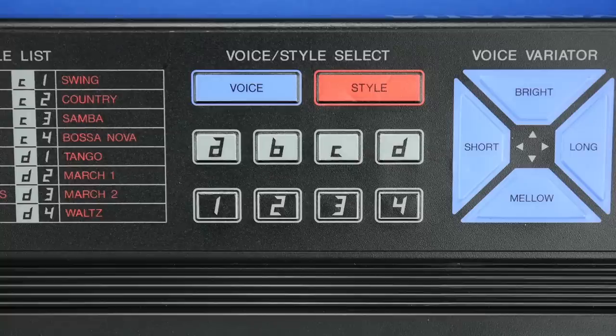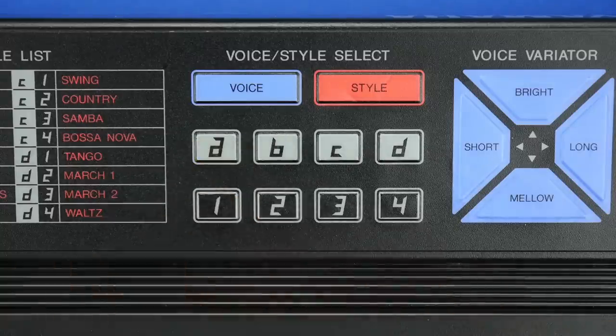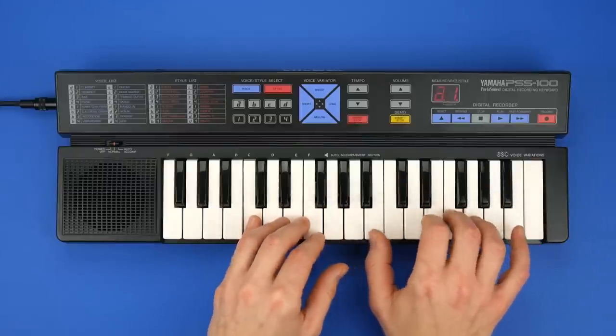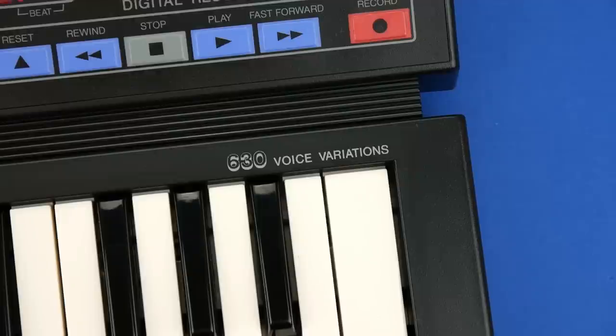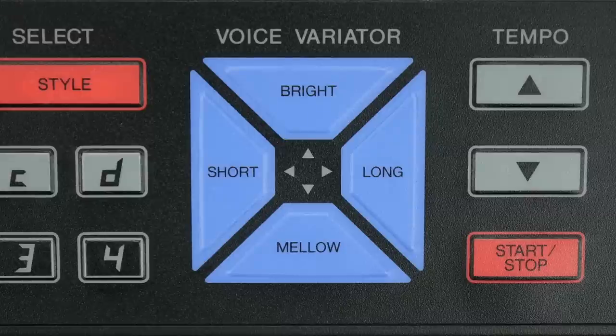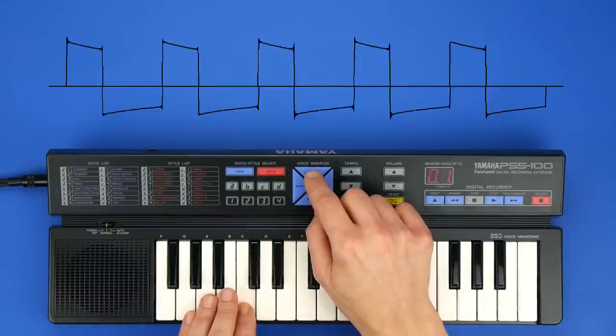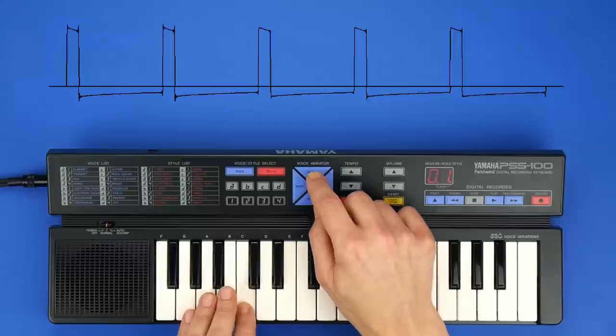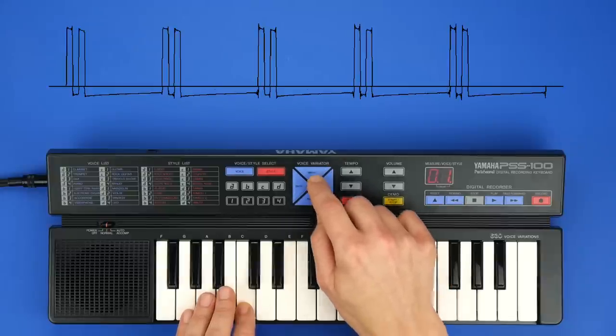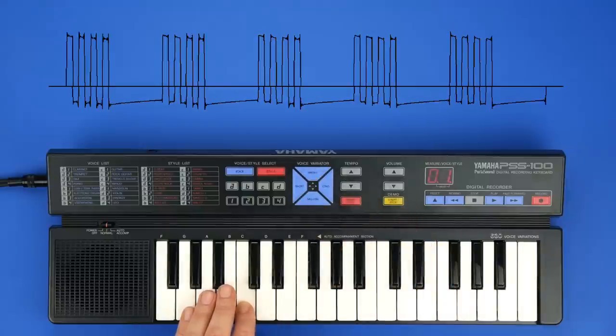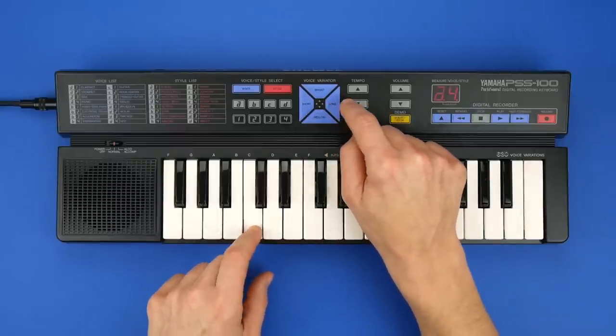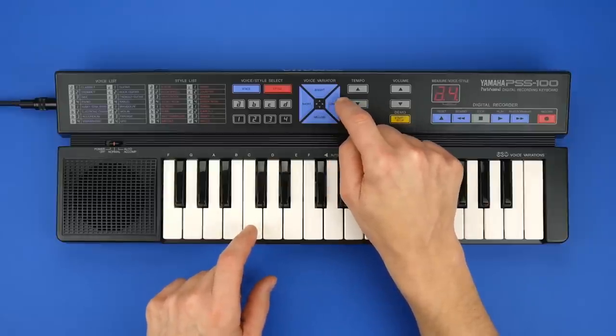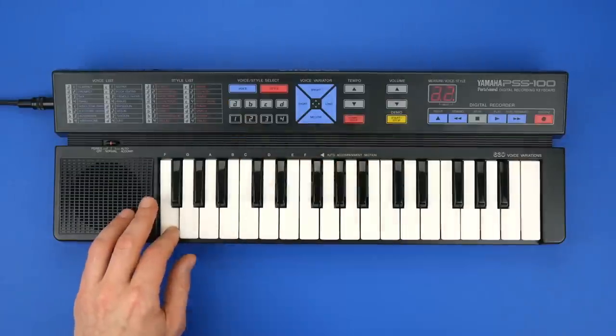We have 16 instruments. They are selected by a combination of number and letter. This is A1 clarinet. You can change the sound with the voice variator. A total of 630 variations are possible. That sounds a lot. But a lot of the variations sound the same. The bright and mellow buttons change the basic waveform. Eight different waveforms are available. The short and long buttons let you choose between five different types of envelope.